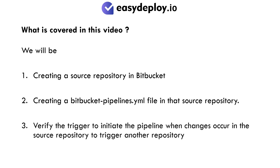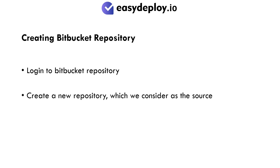What is covered in this video: We will be creating a source repository in Bitbucket, creating a BitbucketPipelines.yml file in that source repository, and verifying the trigger to initiate the pipeline when changes occur in the source repository to trigger another repository.